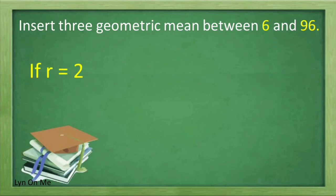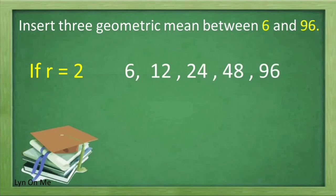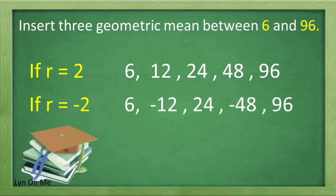So if r is equal to positive 2, our sequence is 6, 12, 24, 48, 96. And if r is equal to negative 2, our sequence is 6, negative 12, 24, negative 48, 96.